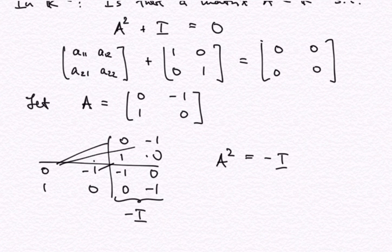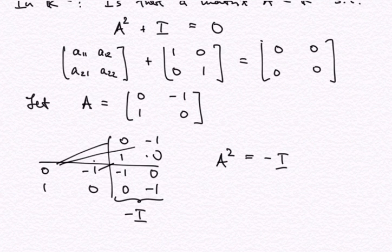So A squared is the negative identity. We can see that in the set of matrices R two by two, the imaginary unit that solves the equation A² plus I equal to 0 exists very naturally — we don't need to introduce a special symbol i to solve this equation. So it's really only a problem in the one-dimensional set of real numbers R where we need to employ this trick and introduce the symbol i. As soon as we go to higher dimensions, it's actually not a problem at all.